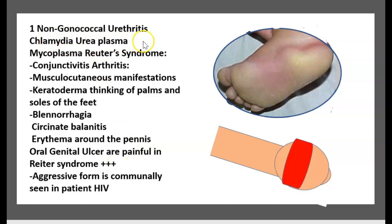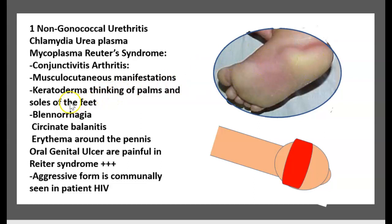Reactive arthritis is caused by non-gonococcal urethritis, triggered by Chlamydia, Ureaplasma, or Mycoplasma — we call this Reiter syndrome. The classic triad includes conjunctivitis, arthritis, and musculocutaneous manifestations including keratoderma, which is thickening of the palms and soles.